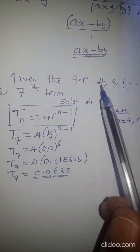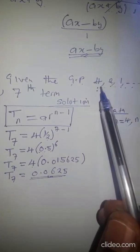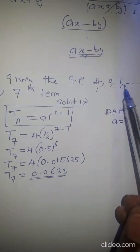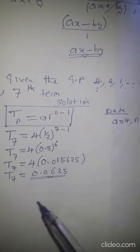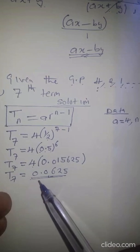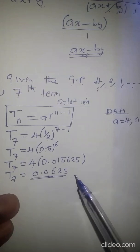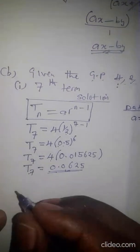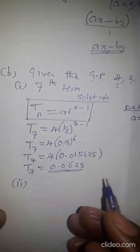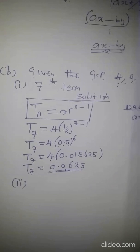Looking at the terms of the sequence — 4, 2, 1 — the numbers are reducing, so we would expect the 7th term to be a small value, and indeed we get 0.0625. That confirms our answer for Part B(i). We can now quickly move on to B(ii), which is asking us to find the sum.